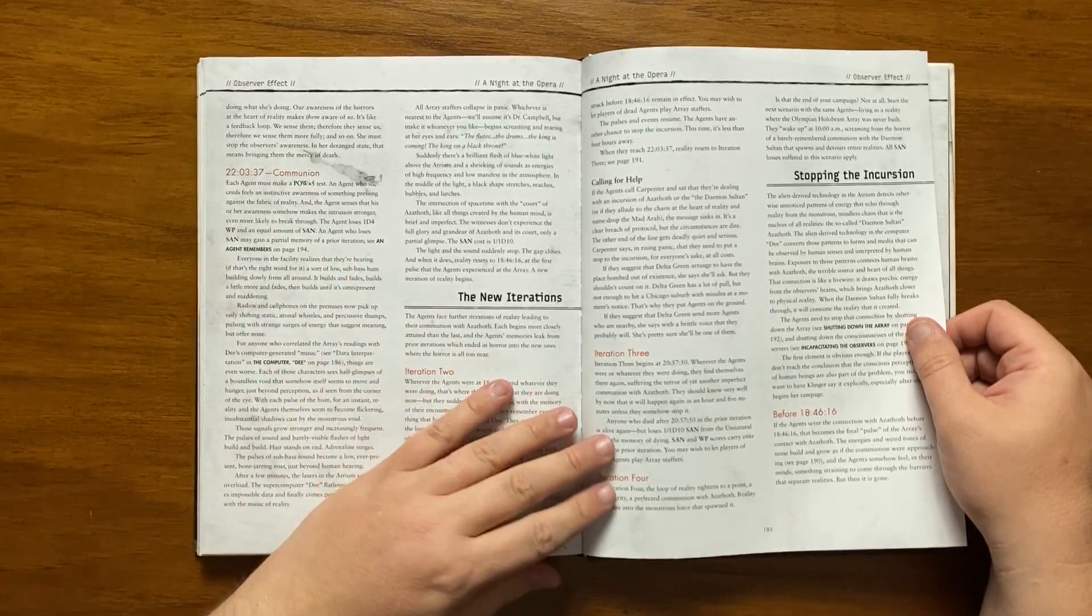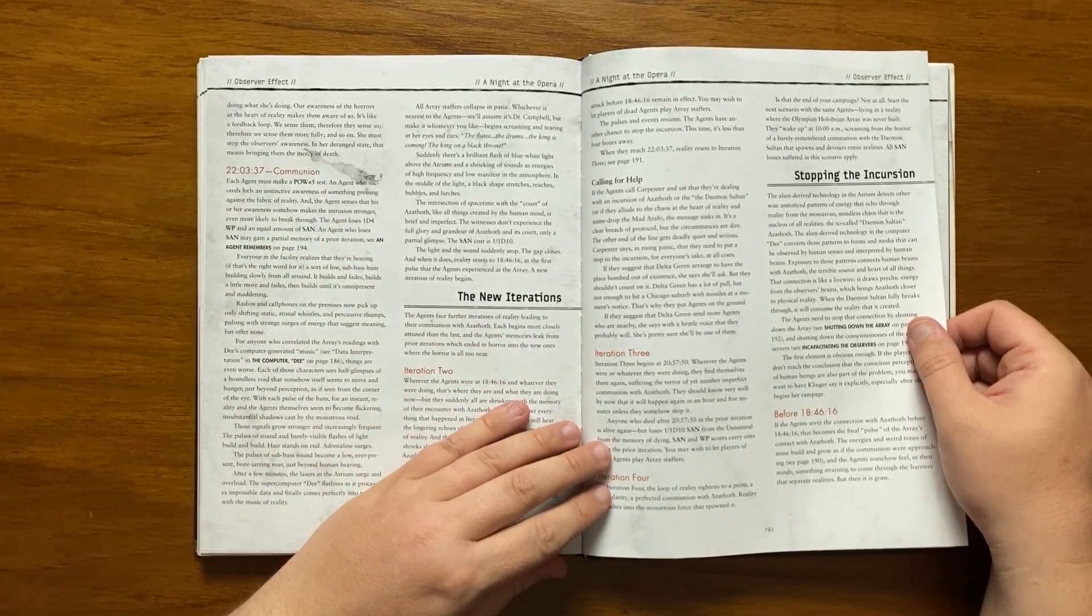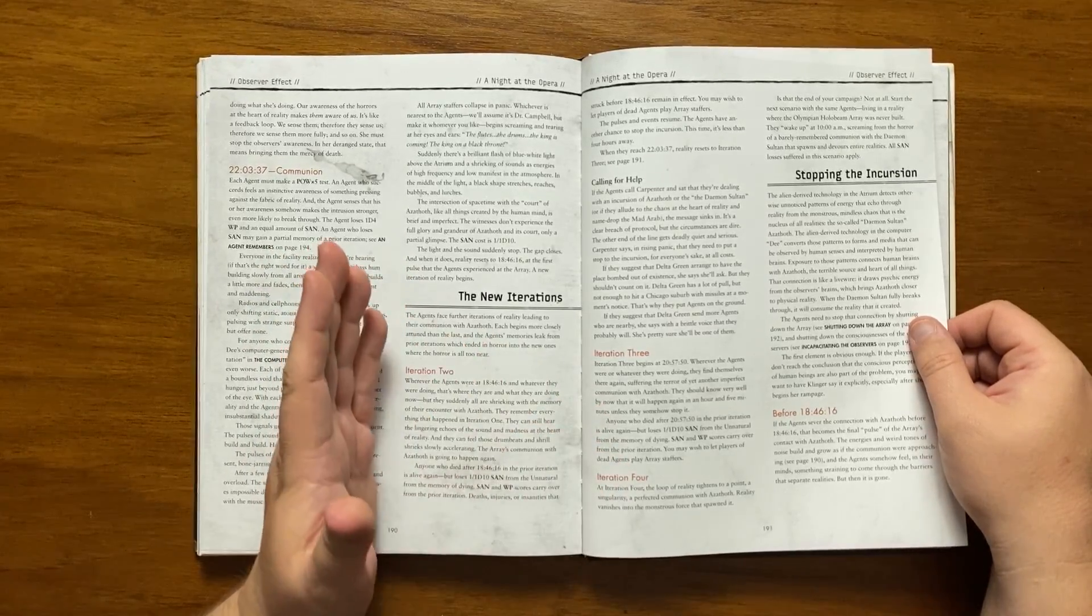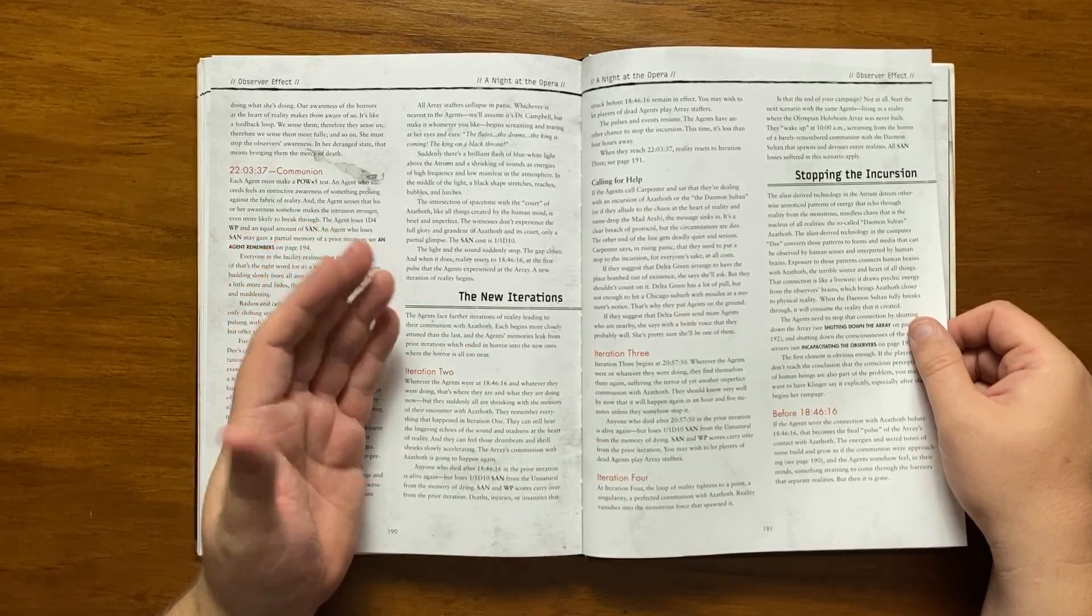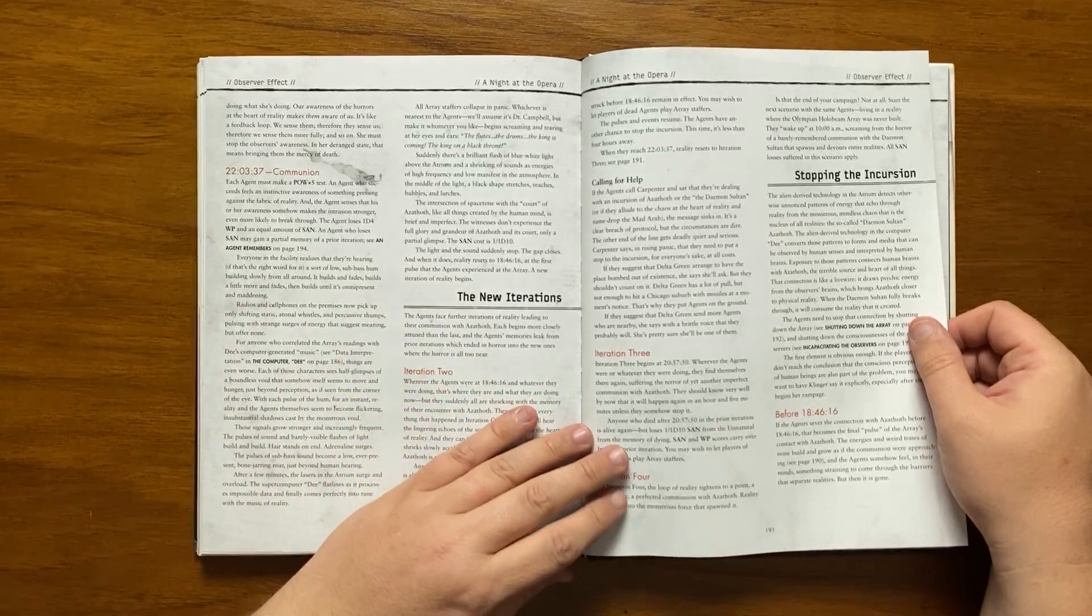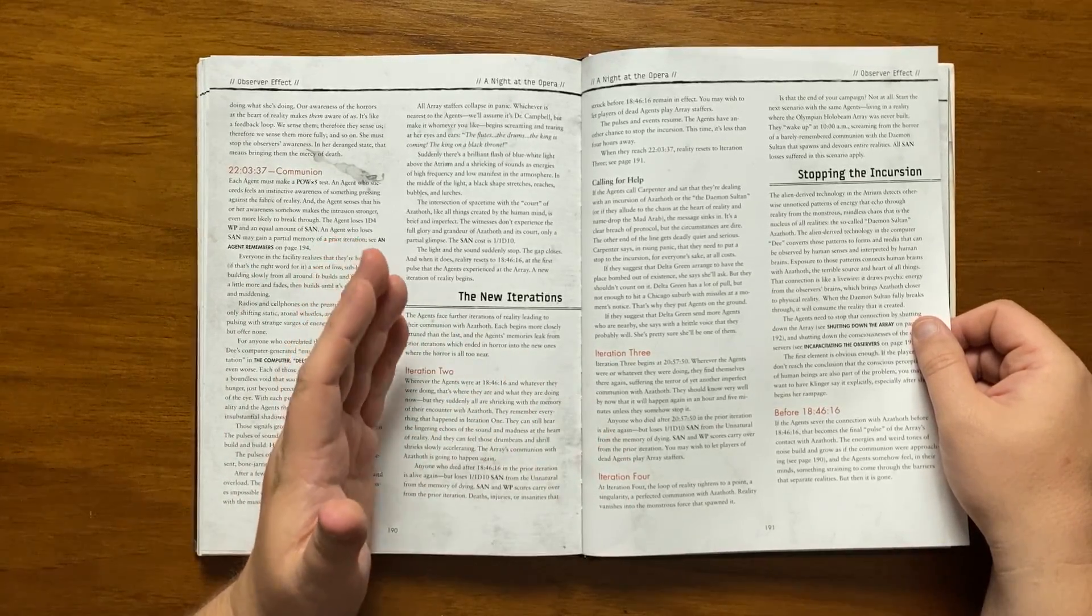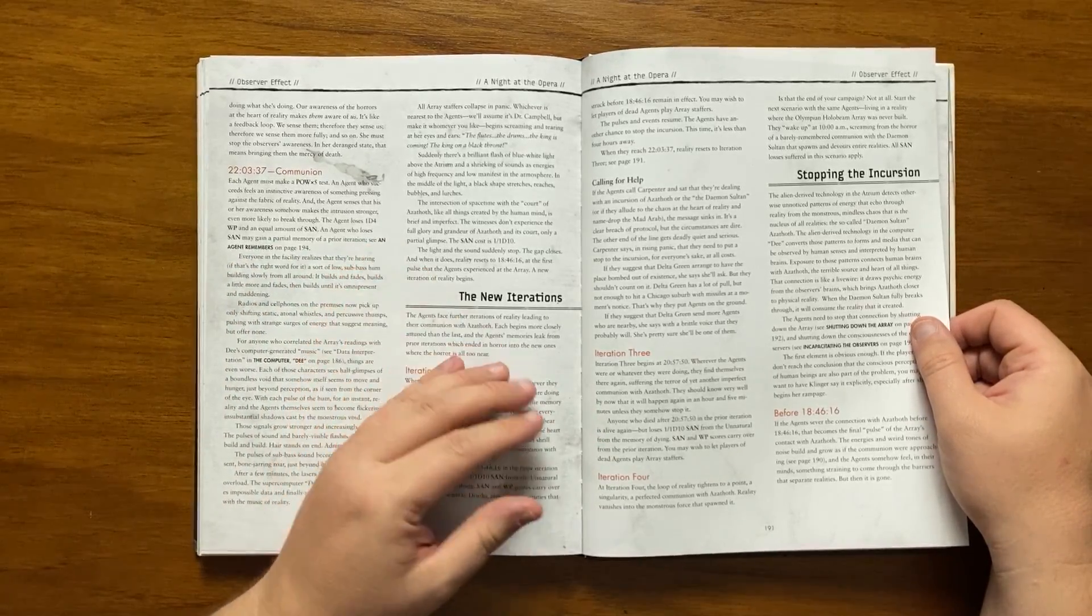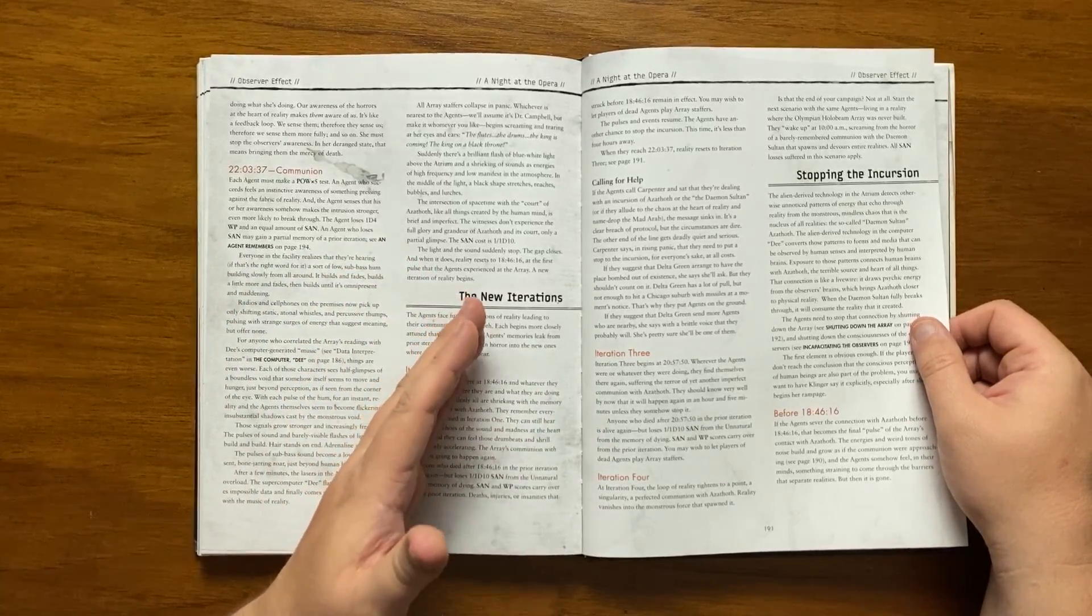At 2057 it hits again. They find a moment of terror and they should all know what will happen in a further 65 minutes. At iteration four, a perfect communion with Azathoth is reached and reality vanishes in the horrifying monstrous forces that spawned it. This does not mean the end of the campaign. It suggests starting the next scenario with the agents waking up screaming in horror and the Olympium Holobium array was never even built, yet they have a deep memory of communion with Azathoth.